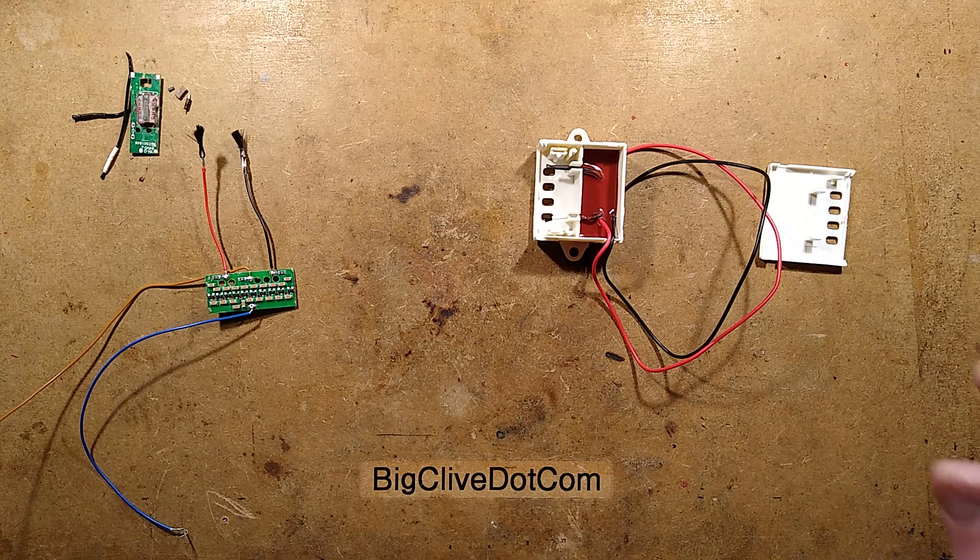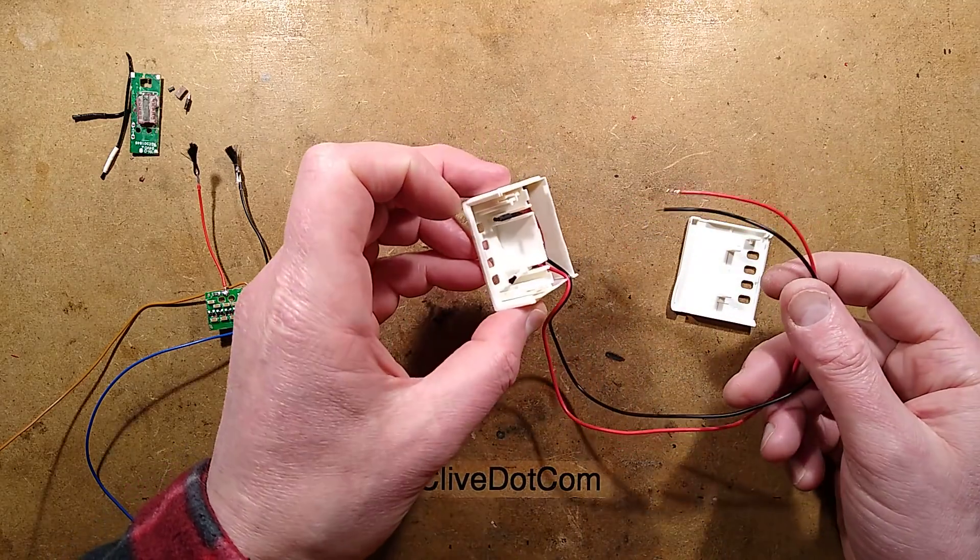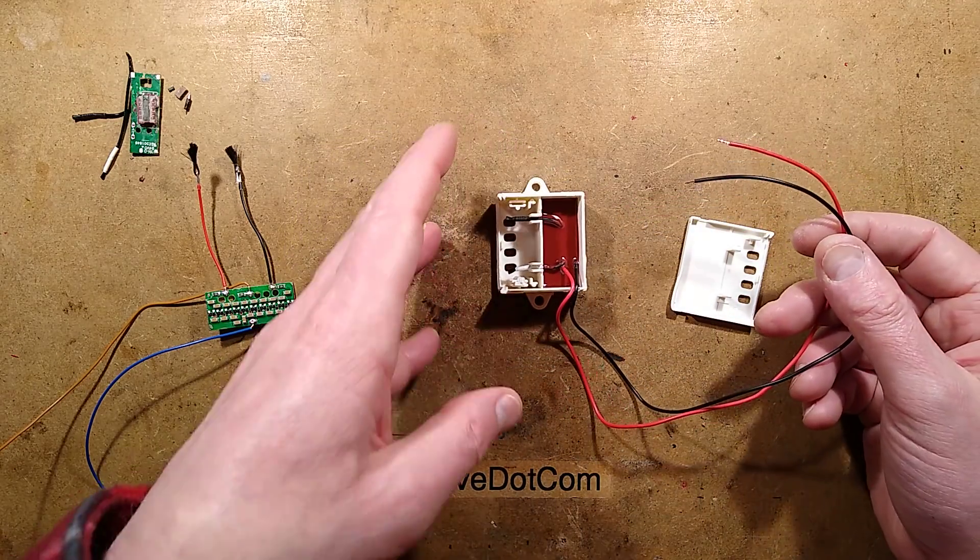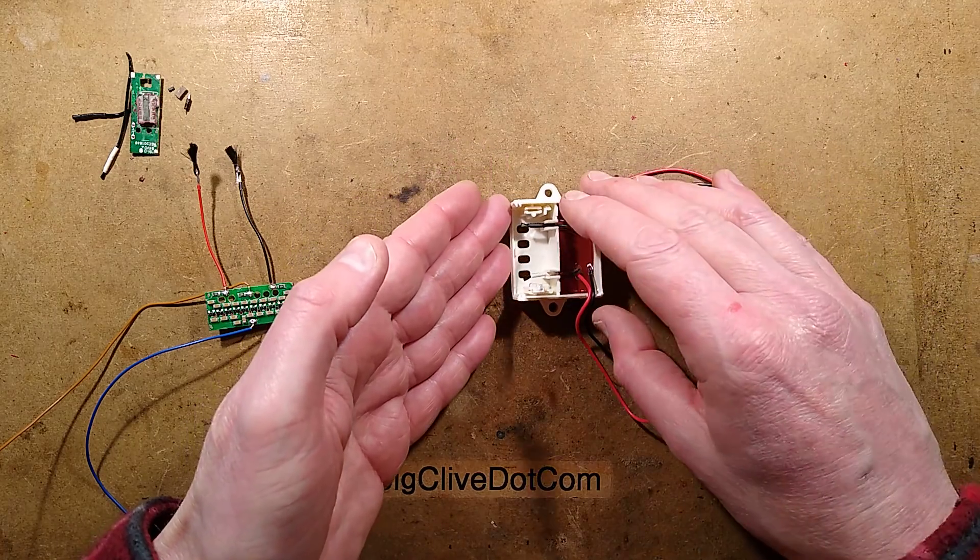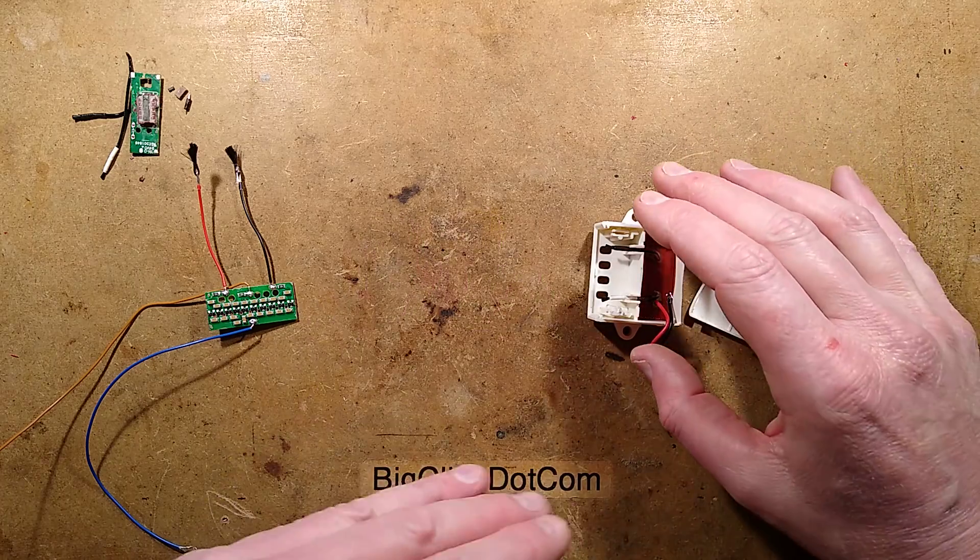In a previous video, I took apart a sterilizing device designed for use in fridges, freezers, or possibly even cold rooms. My opinion was that it creates very small quantities of ozone, and that's how it has its effect.